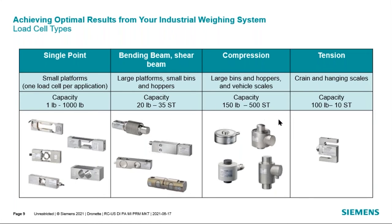Compression cells are the real heavy-duty cells, with maximum capacities ranging from 150 pounds up to about 500 tons. They can be used on very large bins — with a four-legged bin you could get up to 2,000 tons in a weighing system. Compression load cells would also typically be found in vehicle scales, such as truck scales. Tension load cells are designed for cranes or hanging scales. The S-type cell shown here is named for obvious reasons, and tension cells range in capacity from 100 pounds up to about 100 tons.